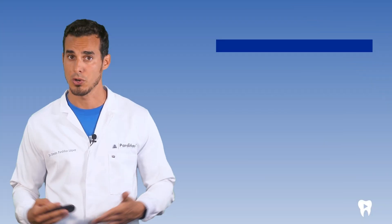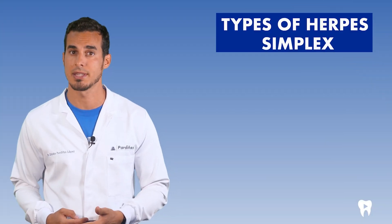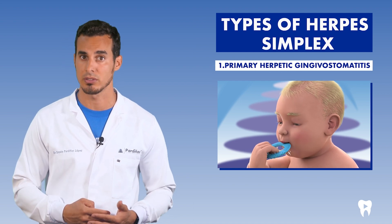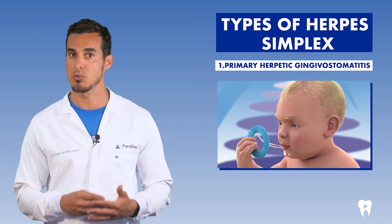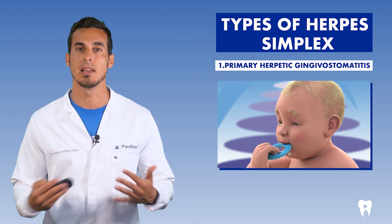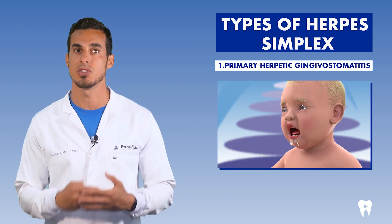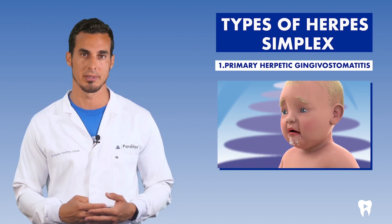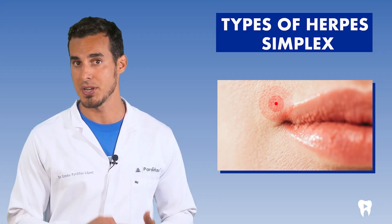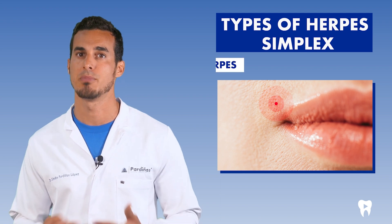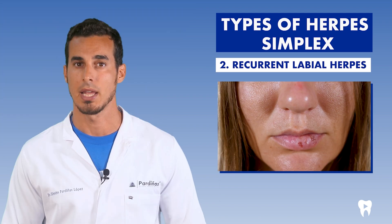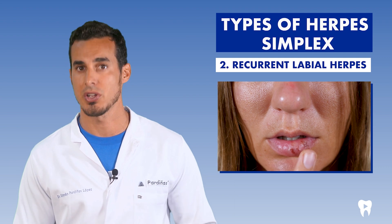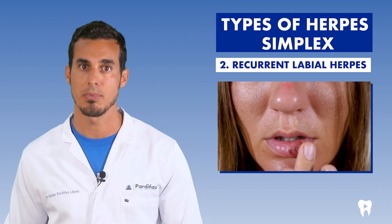There are different types of herpes. Primary herpes occurs the first time the virus comes into contact with the body. It usually occurs in children and is the leading cause of stomatitis in young children. Recurrent herpes occurs in patients who have previously suffered from a herpetic infection, and usually appears at the junction of the lip with the skin.